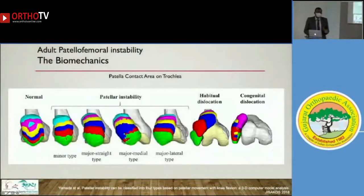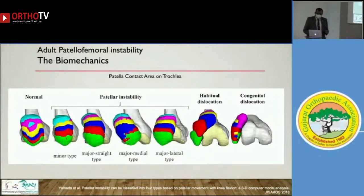All these different degrees of flexion give us one message: the patella and trochlea have a different relationship at different degrees of flexion. There is no single fixed relationship between them.